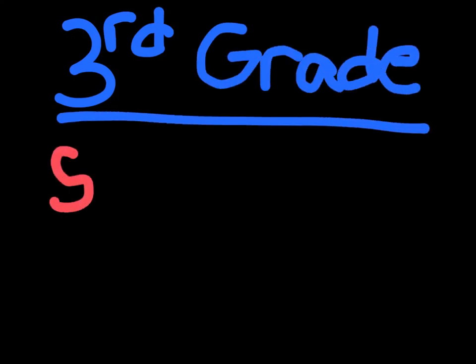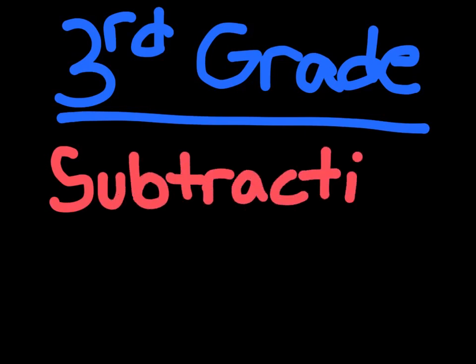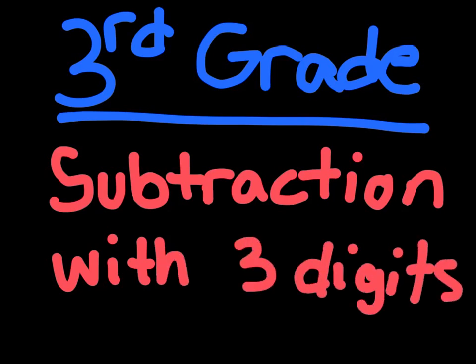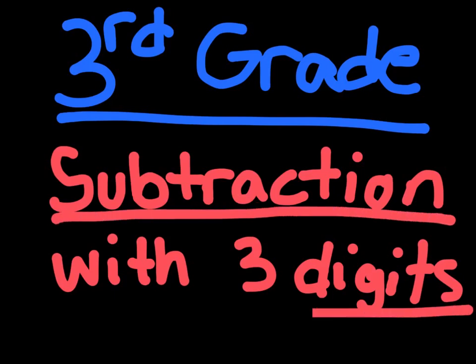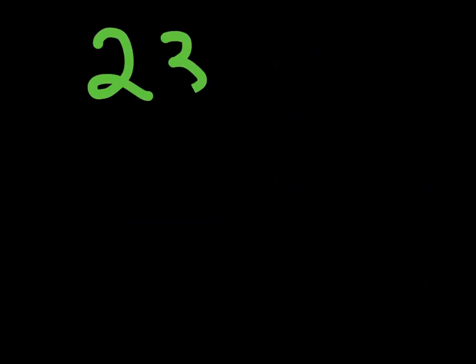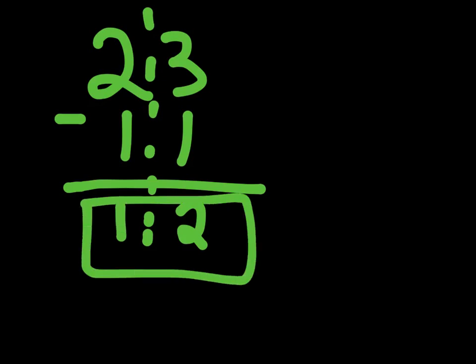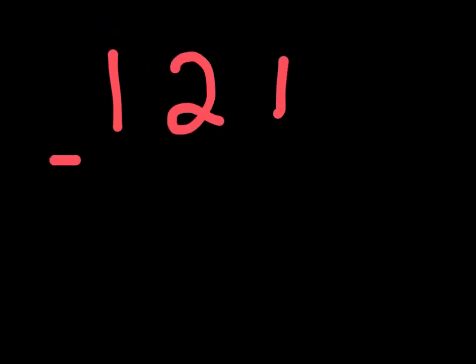Hey, what's up guys? Today we're going to do third grade math and our topic is going to be subtraction with three digits. This is exactly the same as our last topic when we did subtraction with two digits, except we have one more digit to deal with — not much of a big difference. Let's get started. We talked about how to do 23 minus 11 with two-digit numbers, and now we're going to do something similar with three digits. Let's take 121 and subtract 101.